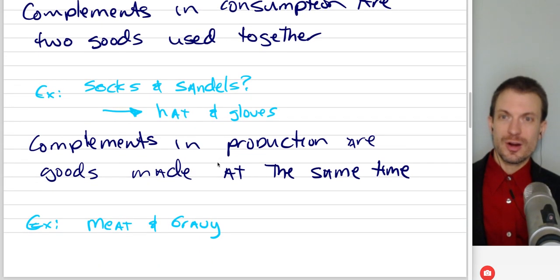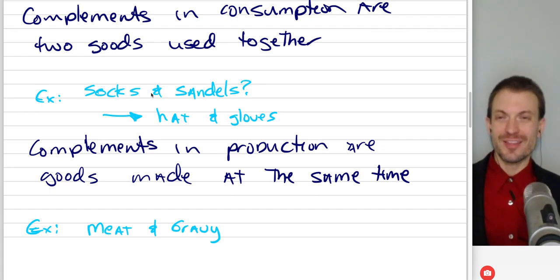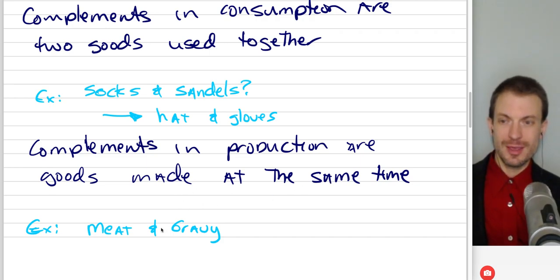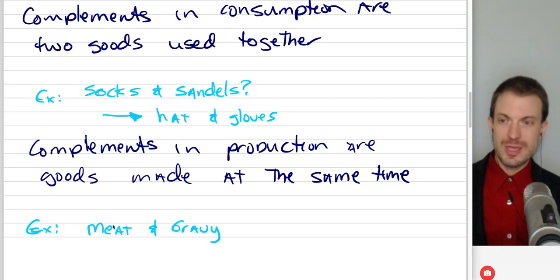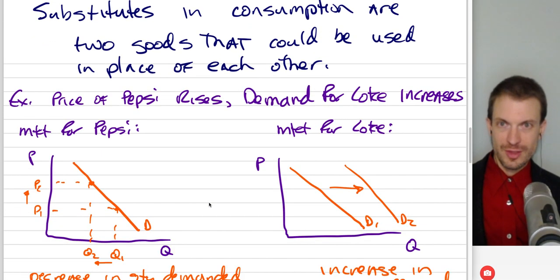Complements in consumption are two goods that are used together — like socks and sandals, or hats and gloves used together on a cold day. Complements in production are goods made at the same time, usually a waste product that comes along with whatever you mean to be making. My example here is turkey and gravy: you cook the turkey and the meat juices are used to make gravy, consumed alongside the turkey at Thanksgiving.